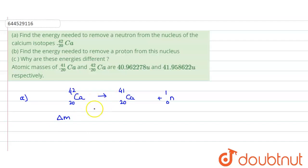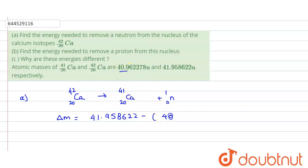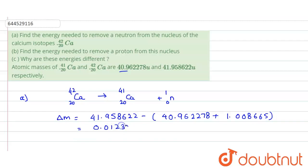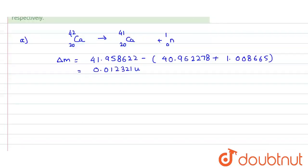We need to find delta m, the difference between the mass of the reactants and products. The mass of Ca-42 is 41.958622 u, minus the mass of Ca-41 which is 40.962278 u, minus the mass of the neutron which is 1.008665 u. Calculating this, delta m turns out to be approximately 0.012321 u.